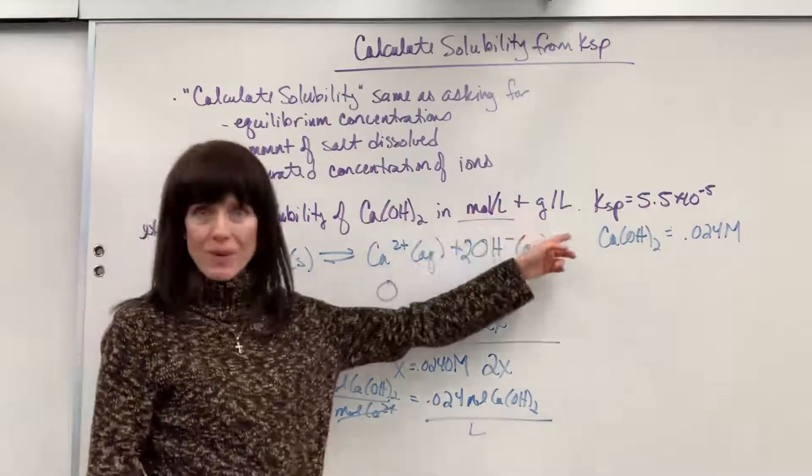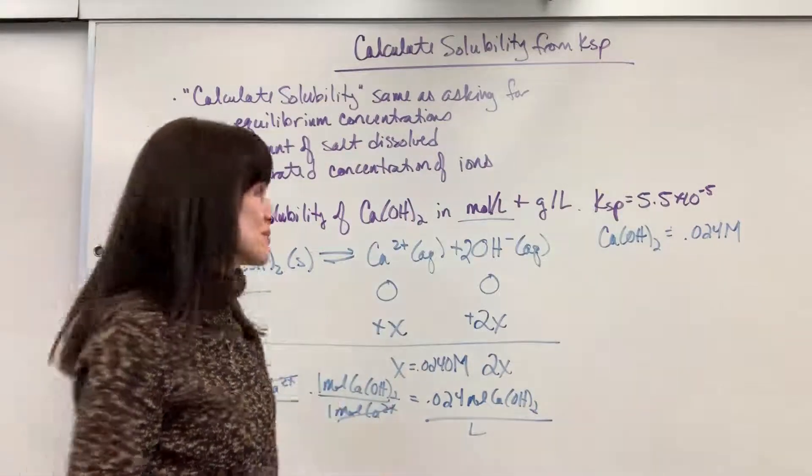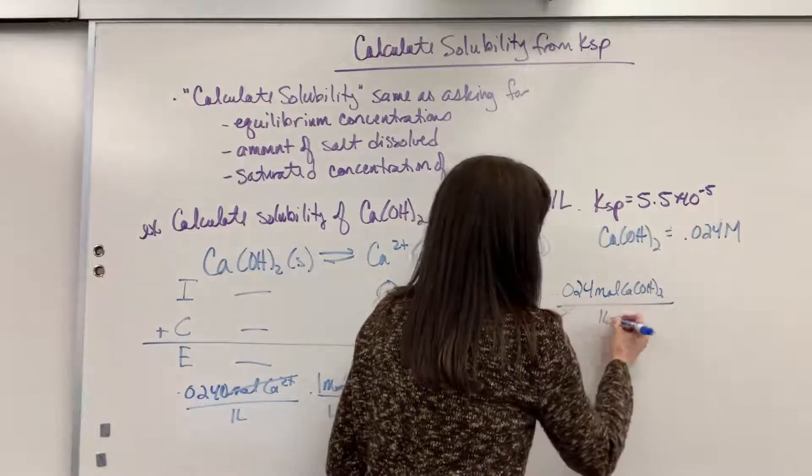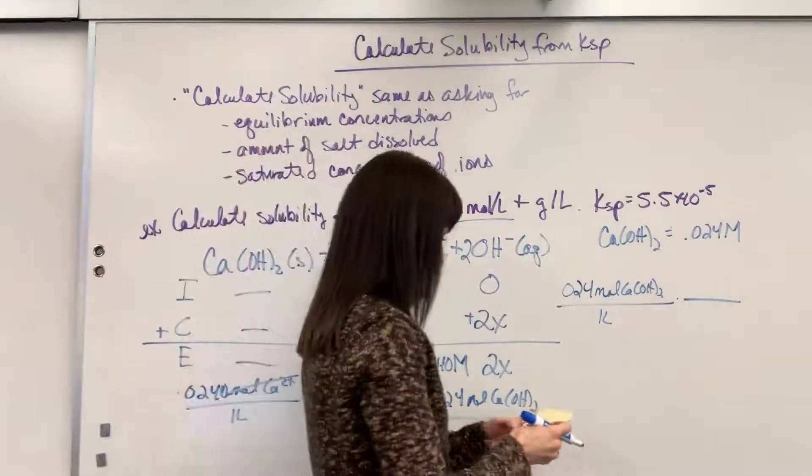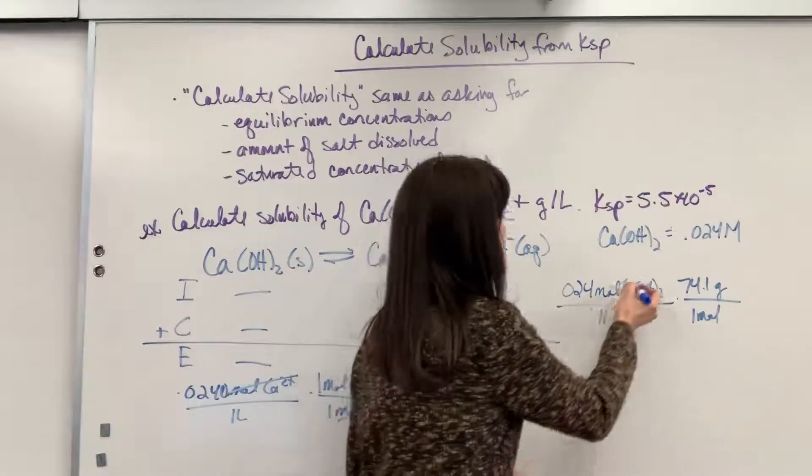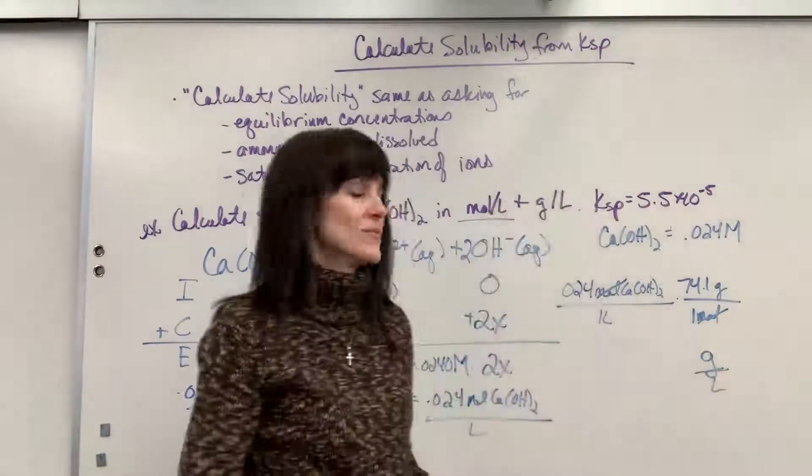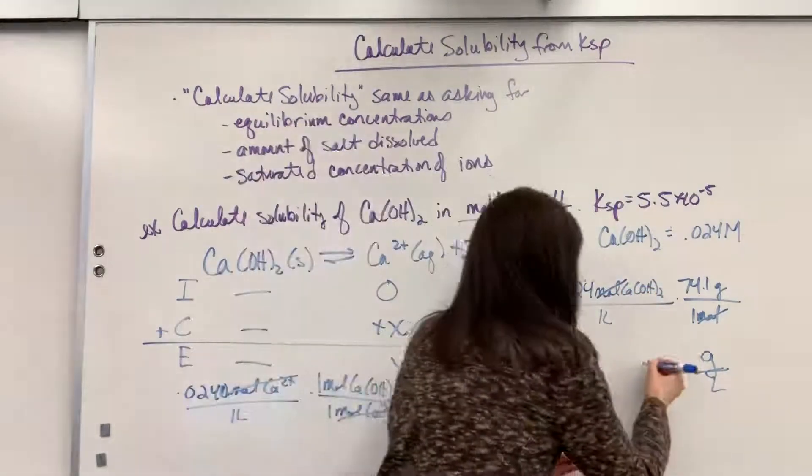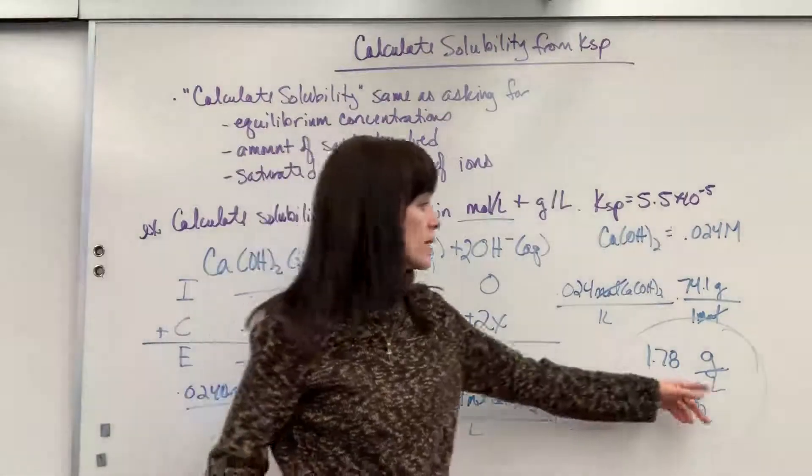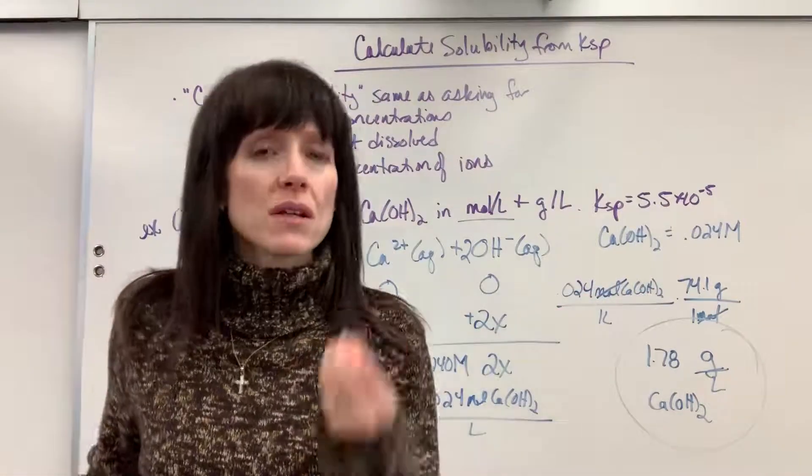Now they wanted grams per liter. Well, molarity is moles per liter. All we have to do is change moles to grams using molar mass. So let's do that. I'm going to have 0.024 moles of my calcium hydroxide per every one liter. I calculated the molar mass and the molar mass of calcium hydroxide is 74.1 grams per every one mole. So that was pretty easy. Notice moles cancel and we multiply—what unit am I left with? We are left with grams per liter. So 0.024 times 74.1 divided by one is going to give us 1.78 grams of the calcium hydroxide will dissolve in every one liter of solution.